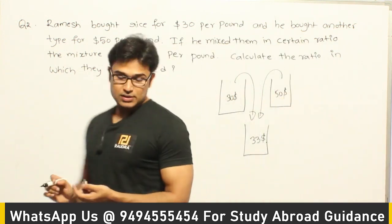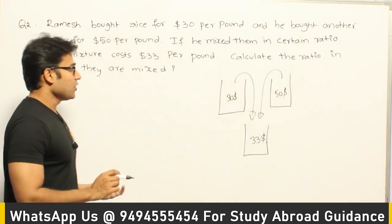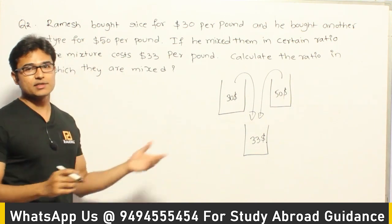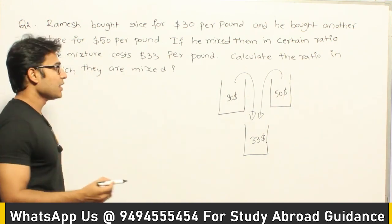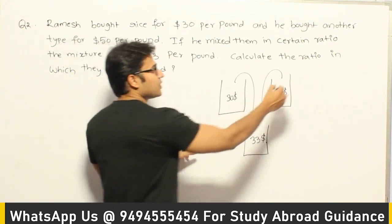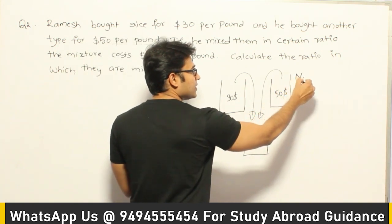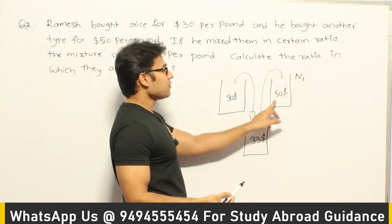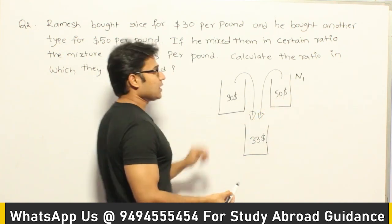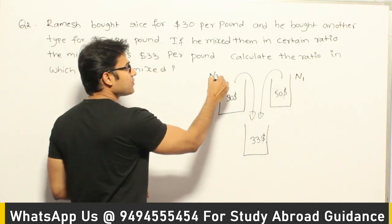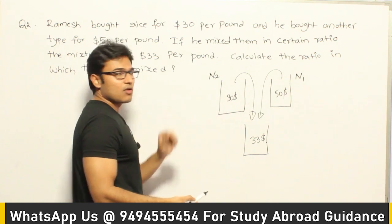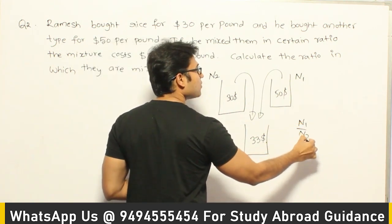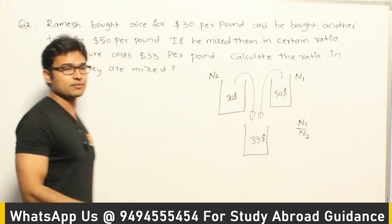We are not going to find out the exact weights. We are just supposed to find out the ratio. If you assume that N1 is the weight associated with the rice of cost $50 and N2 is the weight associated with the rice of cost $30, what we want to find out is N1 by N2 — the ratio, not the exact weights.